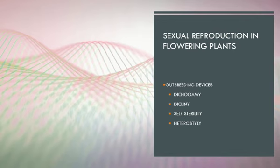In protogyny, stigma matures earlier so that they get pollinated before the anthers of the same flower develop pollen grains. It means that anther and stigma mature at different times so that self-pollination doesn't occur. This process is called dichogamy.